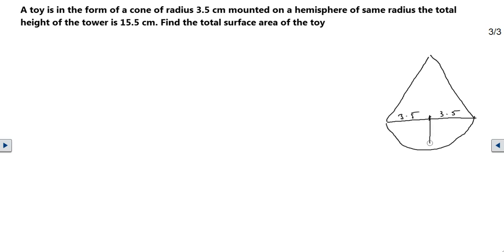It's a toy, not a tower. The radius is 3.5 on both sides, and the height of the hemisphere is always equal to the radius. The complete height of the toy is 15.5, and the hemisphere itself is 3.5, so 15.5 minus 3.5 leaves 12 centimeters.